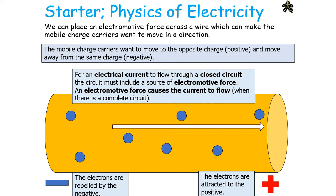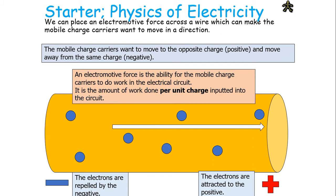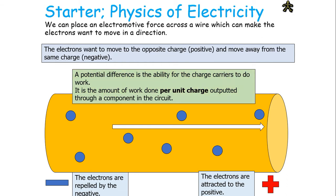When this occurs, it produces an electrical current. For an electrical current to flow through a closed circuit, the circuit must include a source of electromotive force. The EMF is the ability for mobile charge carriers to do work — it is the amount of work done per unit charge inputted into the circuit. The potential difference is the amount of work done out of the circuit per unit charge.